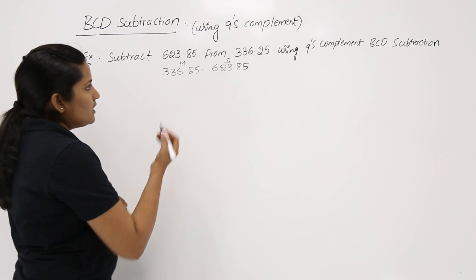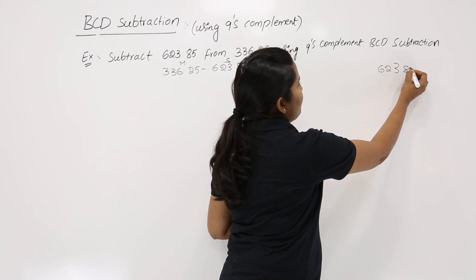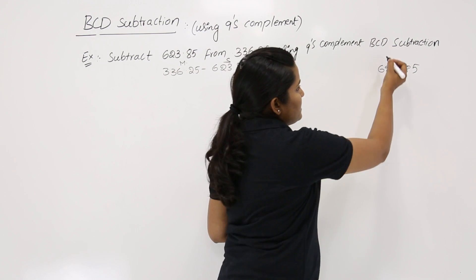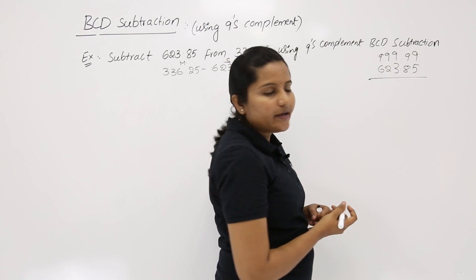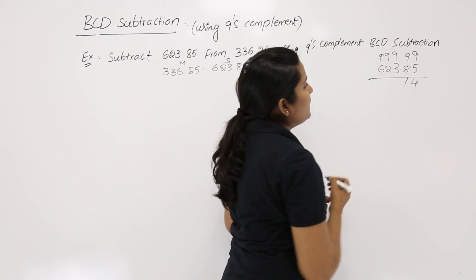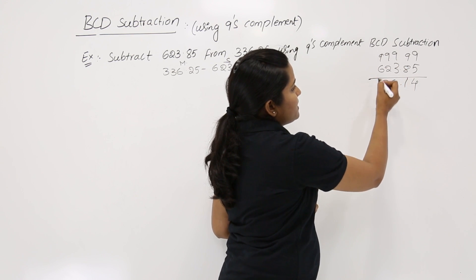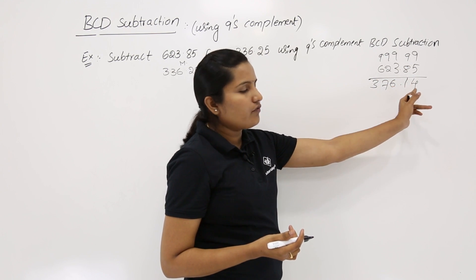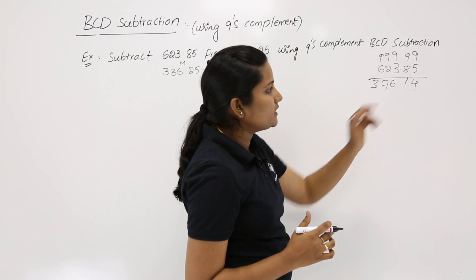Now computing the 9's complement of 623.85 by subtracting each digit from 9: 9−5=4, 9−8=1, 9−3=6, 9−2=7, 9−6=3. So 376.14 is the 9's complement of the subtrahend 623.85.